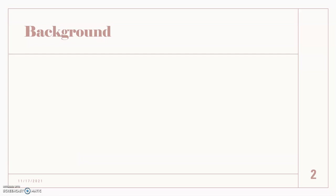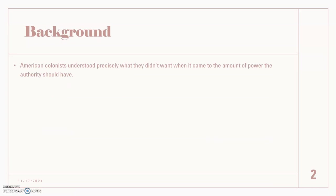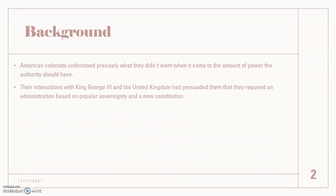So first, this is just a little bit of background so you can get the idea. The American colonists understood precisely what they didn't want when it came to the amount of power the authority should have. Due to their interactions with King George III and the UK, it had convinced them that they needed a government based on popular sovereignty and a new constitution rather than a monarchy, which was commonly followed by governments back in the day.